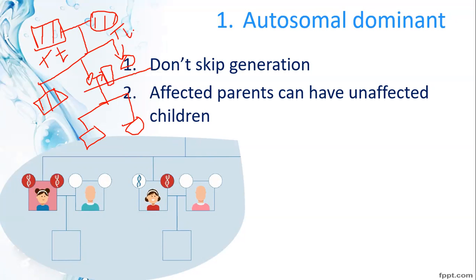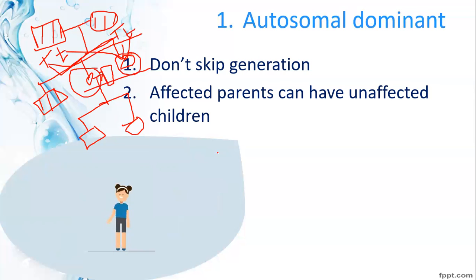In the next generation, looking at gene combinations: heterozygous dominant, heterozygous, and homozygous recessive (small t, small t) are produced. The unaffected offspring come from the homozygous recessive gametes. So in autosomal dominant, affected parents can produce both affected and unaffected children.